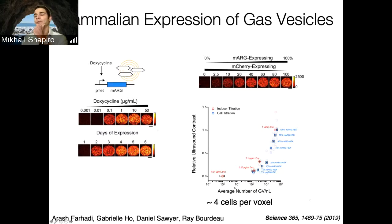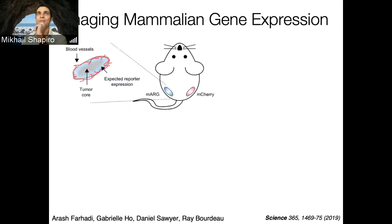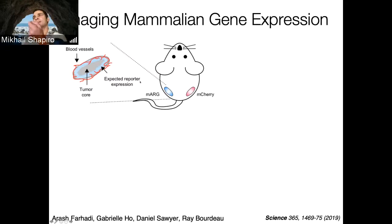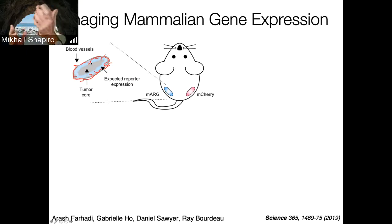Thin-section electron microscopy of an HEK cell expressing gas vesicles shows bundles of gas vesicles formed inside — occupying only a tiny fraction of the cytoplasm, but sufficient to get ultrasound contrast in these mammalian cells. Connecting these acoustic reporter genes to a simple doxycycline-driven genetic circuit, we see the expected increase in signal by ultrasound as we increase doxycycline in live HEK cells in hydrogel. We can follow kinetics of expression over several days. As of that paper, we could detect about four mammalian cells per voxel — quite a high sensitivity compared to virtually any other non-invasive imaging technique.